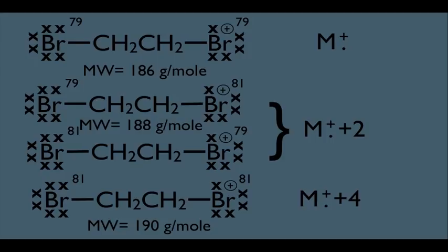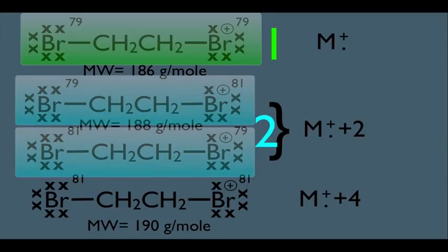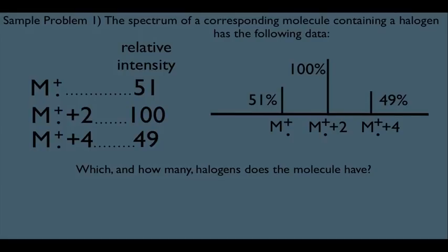Now we check the ratios. The chances of getting the M peak at 186 is 1; the M-plus-2 at 188 is 2 (two arrangements); the M-plus-4 at 190 is 1 — giving a 1-to-2-to-1 ratio. Going back to our spectrum, the relative abundances of the peaks are indeed 1-to-2-to-1. Our analysis of Br landed right on the dot. The answer is: our molecule most likely has two Brs.